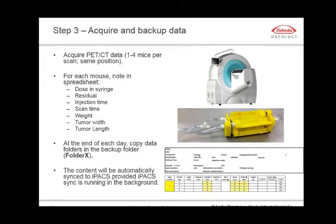We can then go to acquiring our data. To maximize throughput, we've printed a bed using a 3D printer that contains four ports for delivering anesthesia during scan, so we typically acquire four mice per scan. Each time we acquire a scan, we record for each mouse on an Excel spreadsheet: the dose in the syringe, the residual, injection time, scan time, animal weight, tumor width, and tumor length — I'll refer to these as metadata. At the end of the day, we manually copy data from the acquisition machine to folder X on our server, and IPACSync mirrors it into folder Y on IPACS.